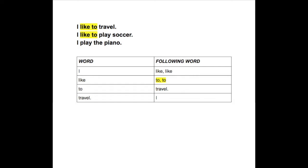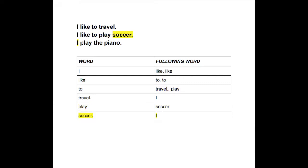But this time, after the word 'to,' we have the word 'play.' So we have two words that can follow the word 'to' — we have 'travel' and 'play.' And then finishing up the rest of that sentence, we have 'soccer' following 'play,' and 'I' following 'soccer.'